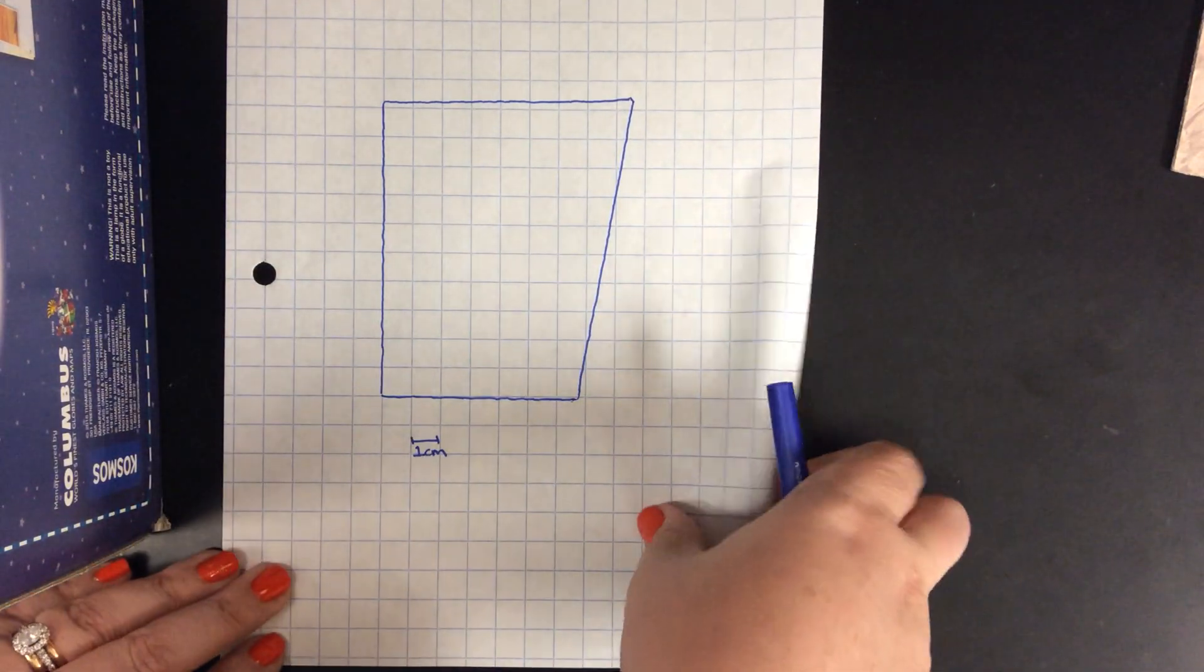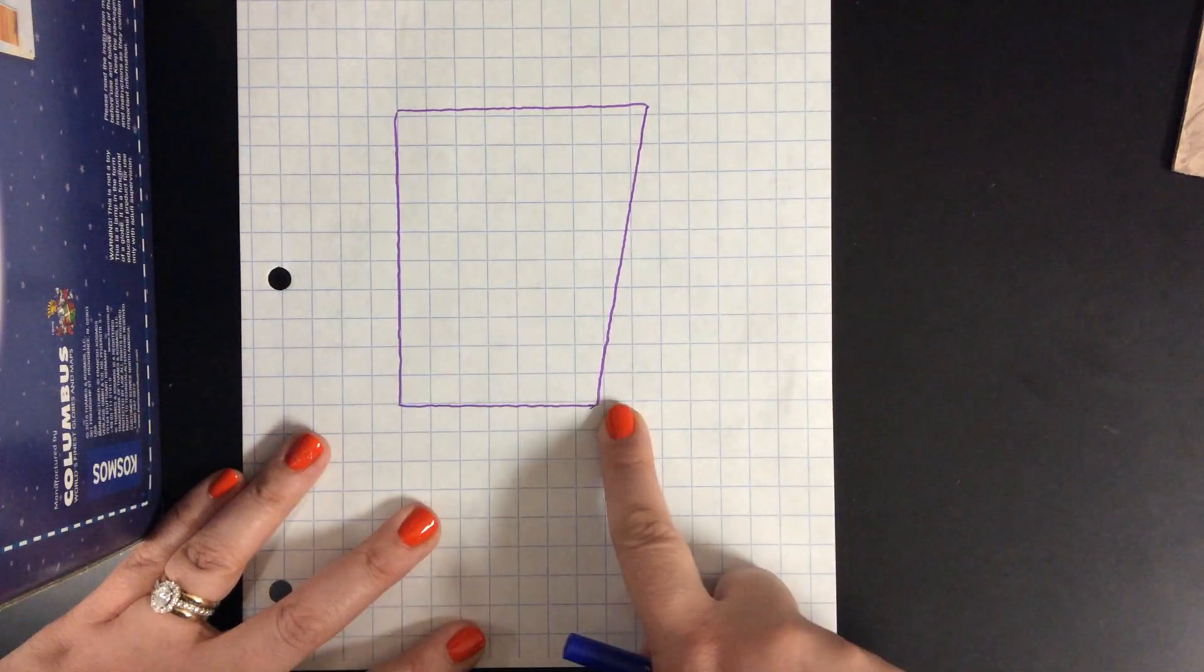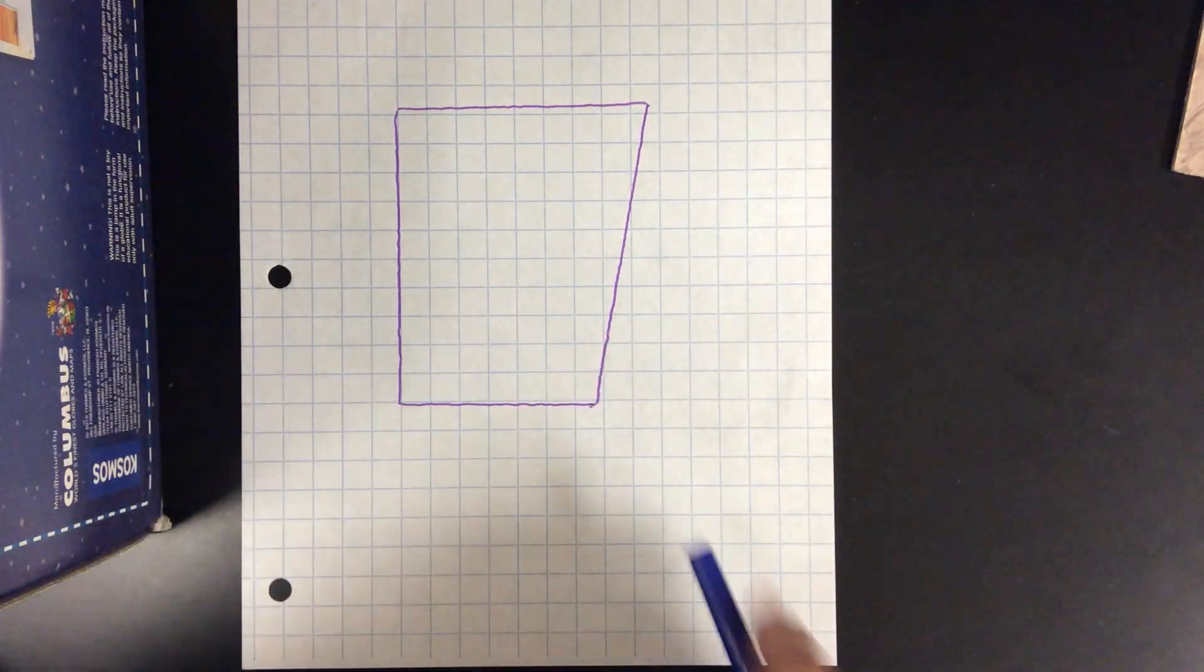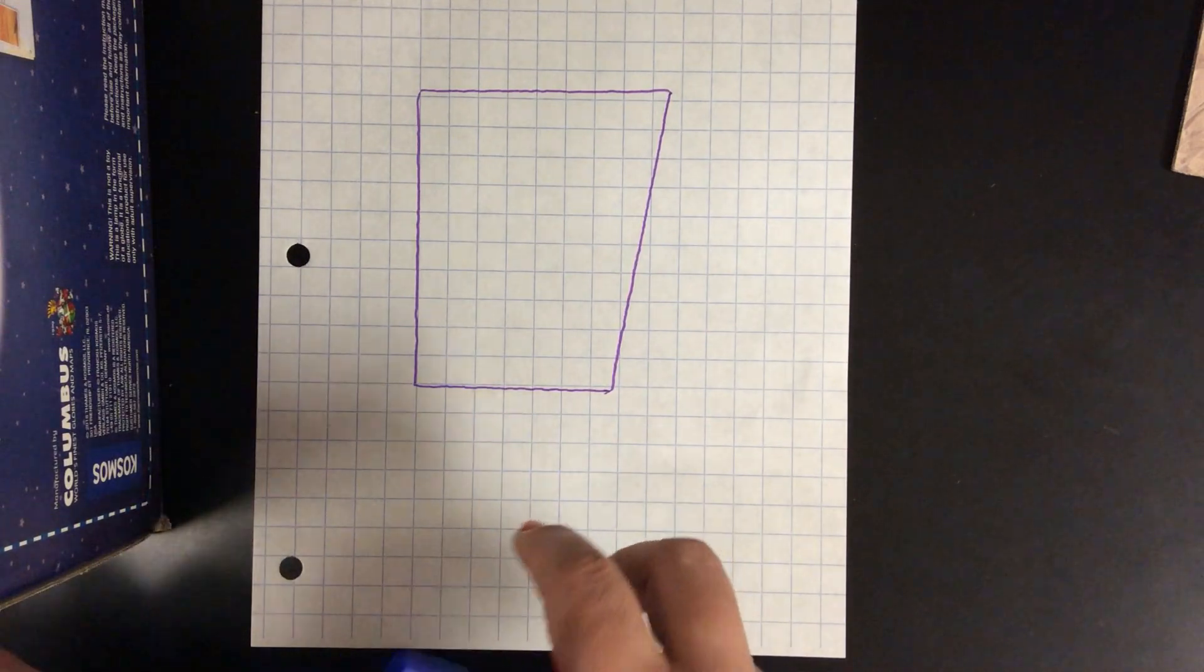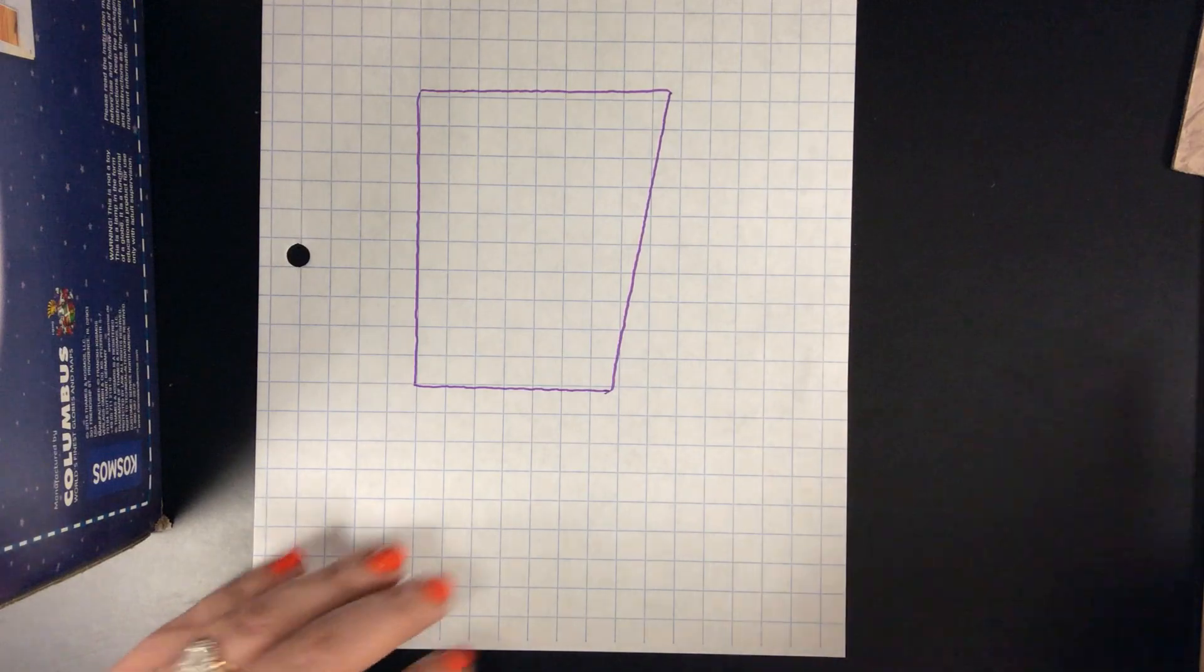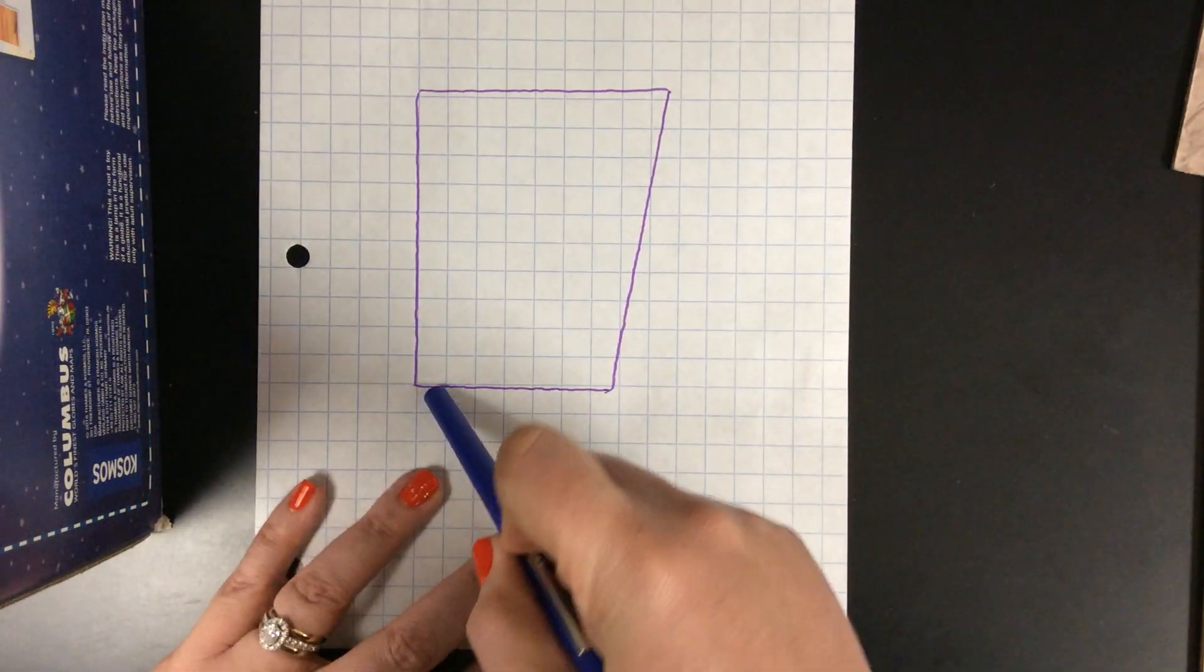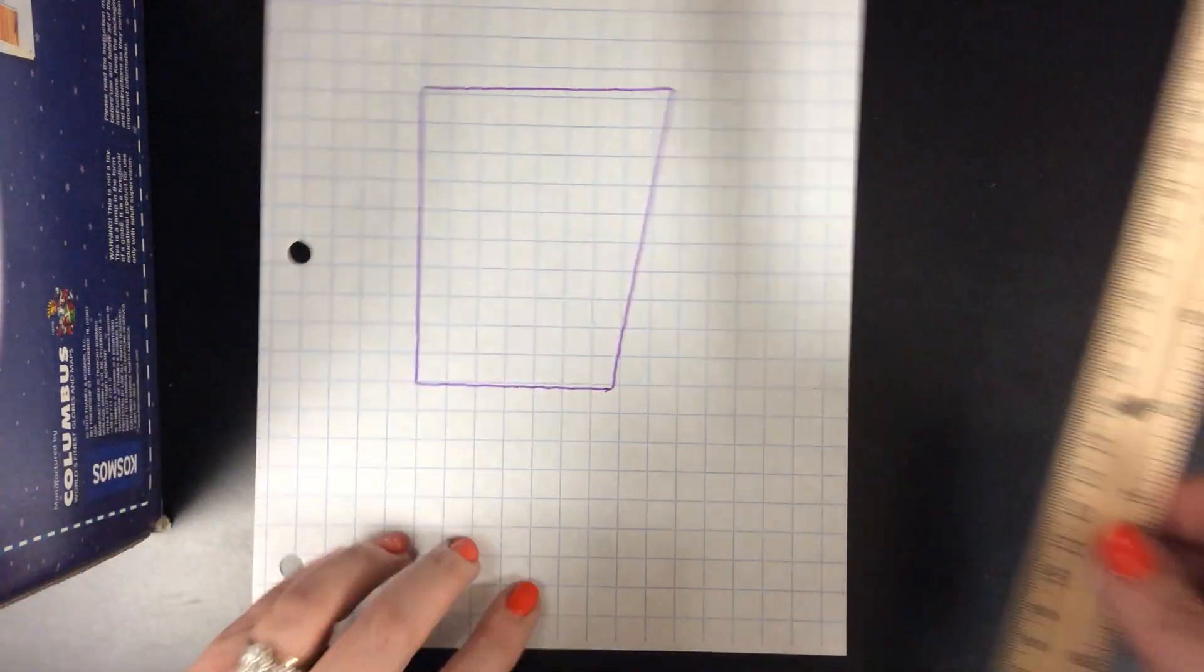Another way that you can do it is, again, to take the same tracing. Only now I want to break this up into regular shapes that I know how to find the area of. So what I can do with this right here is to actually break it up into two triangles.